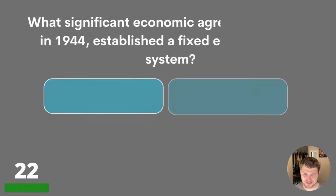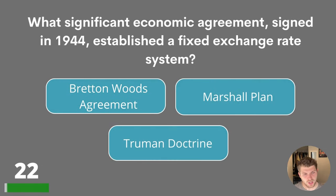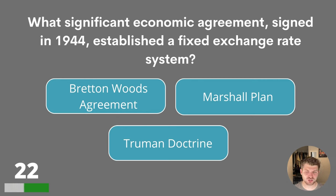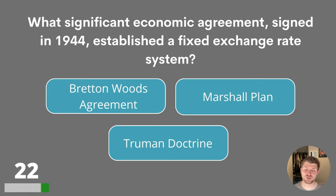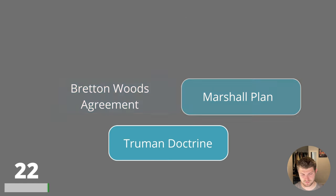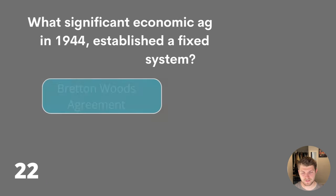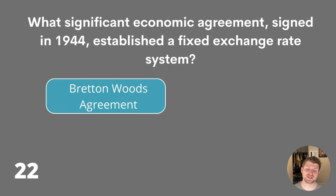Question twenty-two. What significant economic agreement signed in 1944 established a fixed exchange rate system? Bretton Woods Agreement, Marshall Plan or Truman Doctrine? The answer is Bretton Woods Agreement.